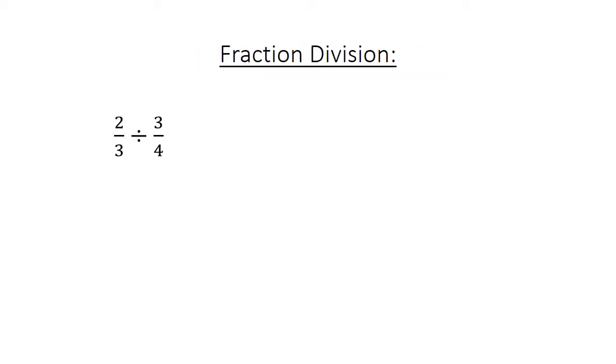Fraction division. 2 over 3 divided by 3 over 4 equals 2 over 3 times 4 over 3 equals 8 over 9.